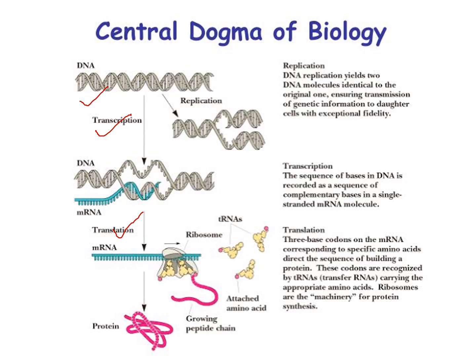In the central dogma, DNA transfers information to mRNA by copying the sequence — this process is called transcription. The copied genetic code in mRNA then goes to the ribosomes, where in the translation process, ribosomes synthesize different types of proteins using the genetic information copied from DNA to mRNA.